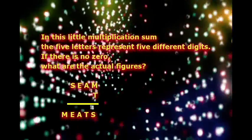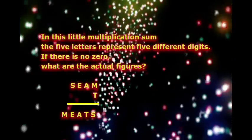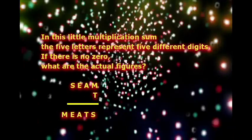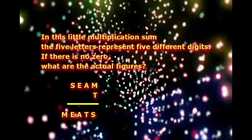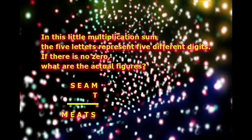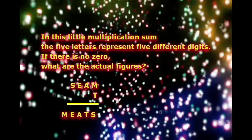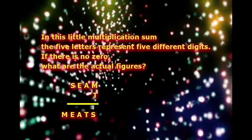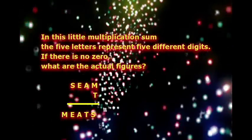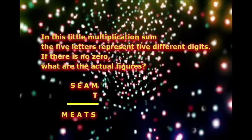In this little multiplication sum, the 5 letters represent 5 different digits. If there is no 0, what are the actual figures? S E A M S times T equals M E A T S.